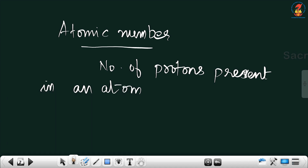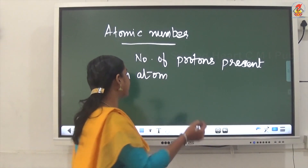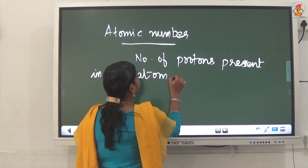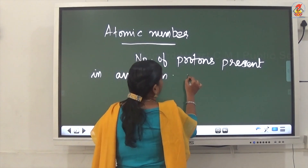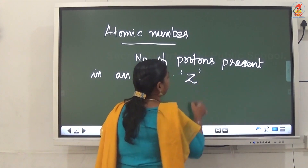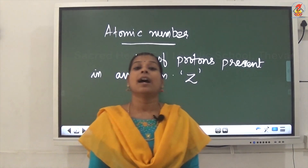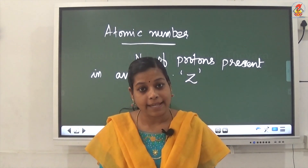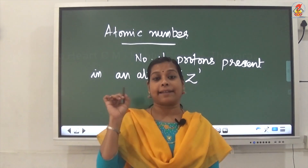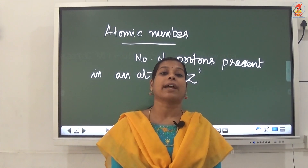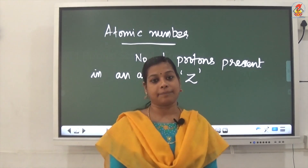The number of protons present in an atom is known as the atomic number of an element, and it is represented by the letter Z.